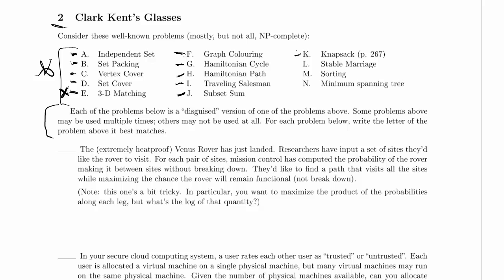Knapsack is a more complex version of subset sum. You're given a list of objects, each with a weight and a value — those are independent, so something could be light and valuable, or heavy and cheap. You're given a weight limit you cannot exceed, and a threshold value. The question is: can you pick items respecting the weight limit that have at least that total value?